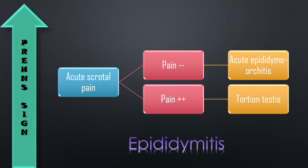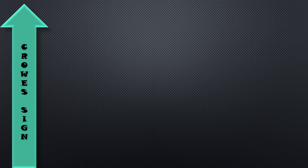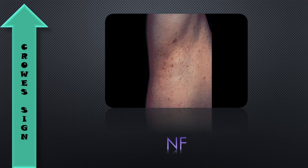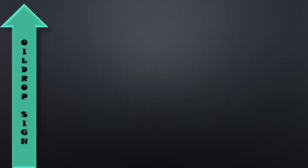The next one is the Crowe sign, seen in neurofibromatosis. This is nothing but axillary freckling.